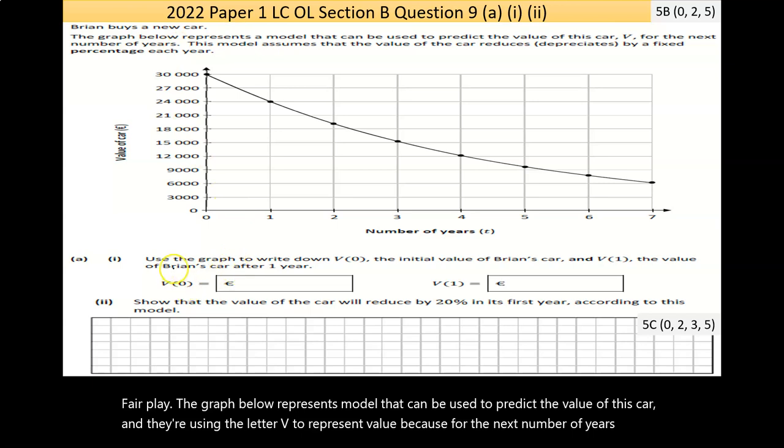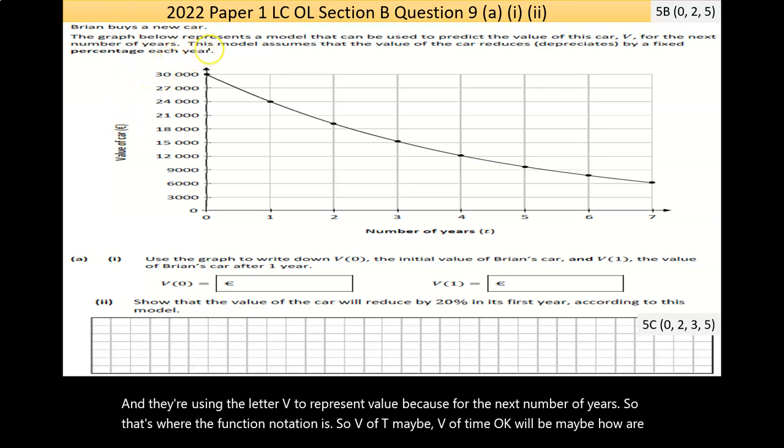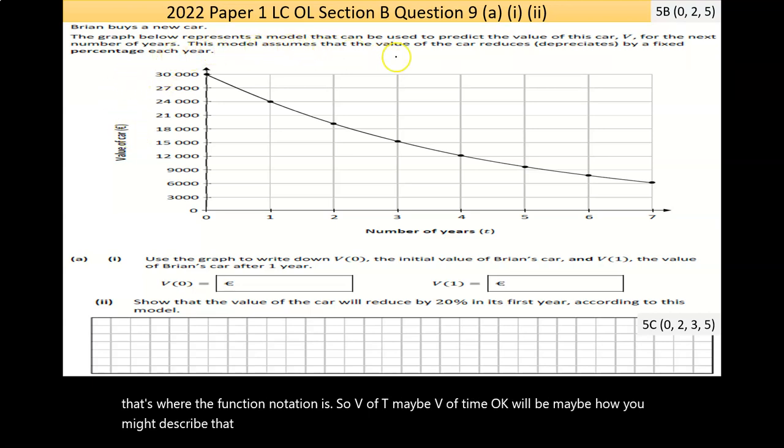They're using the letter V to represent value for the next number of years. So V(T), maybe V of time, is how you might describe that. This model assumes that the value of the car reduces or depreciates by a fixed percentage each year.